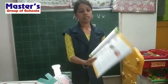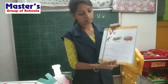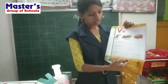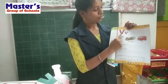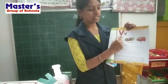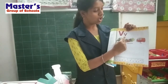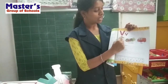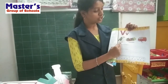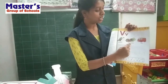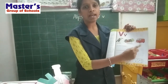Look here children. V. This is capital V and this is small v. V says vulture. V says vegetable. V says van.